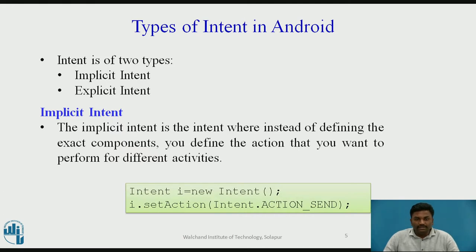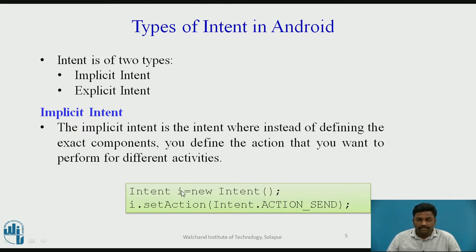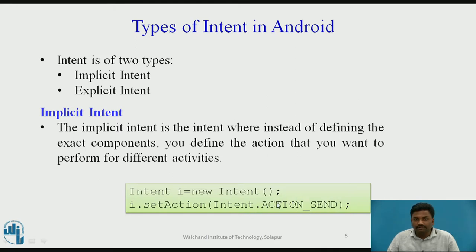This is how we define implicit intent: Intent i = new Intent(). Intent is a class and i is an object — object i is created for the Intent class. Once you create this object, you can use all the methods present inside that class. Then call i.setAction(Intent.ACTION_SEND). So if I want to send a particular message, the ACTION_SEND action will do this. These are all inbuilt functions which you can use.